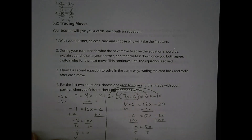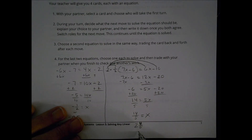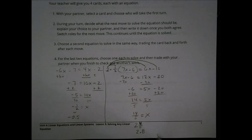Dividing both sides by 5, x equals 14 fifths. It's not a very nice answer, but I can leave it as an improper fraction, or convert it to the mixed number 2 and 4 fifths, or write it as the decimal 2.8. All of those work.